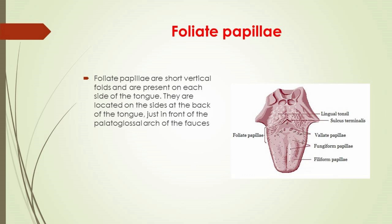Foliate papillae are short vertical folds present on each side of the tongue, located at the back just in front of the palatoglossal arch. There are four or five vertical folds of variable size and shape. They appear as a series of red, leaf-like ridges of mucosa covered with epithelium containing keratin and bearing many taste buds. They are usually bilaterally symmetrical; sometimes small and inconspicuous, at other times prominent.